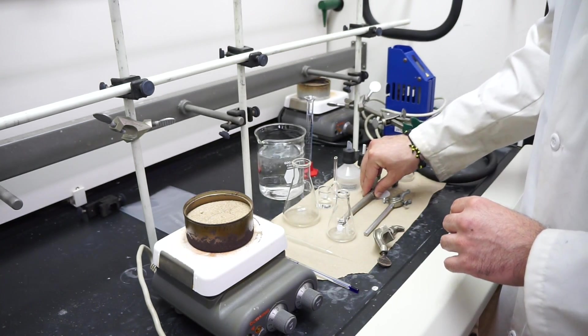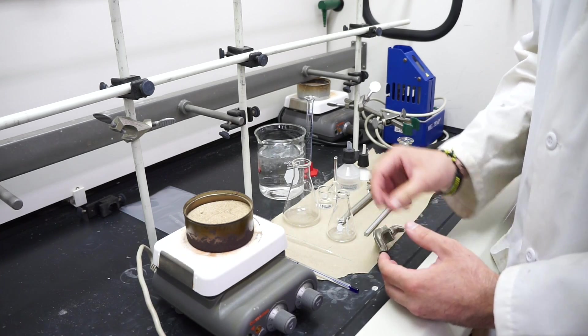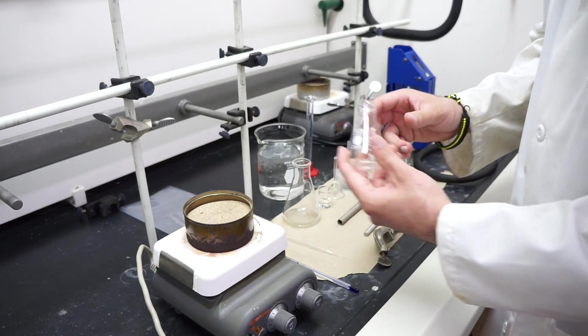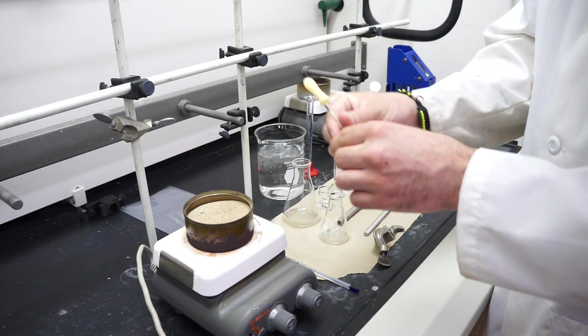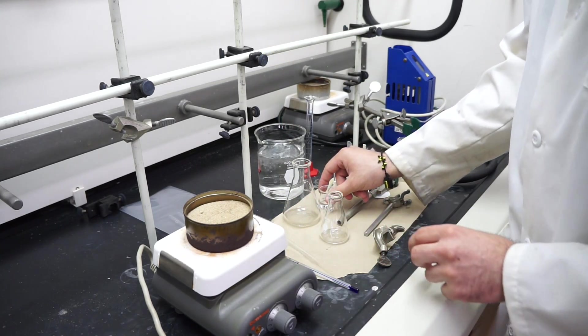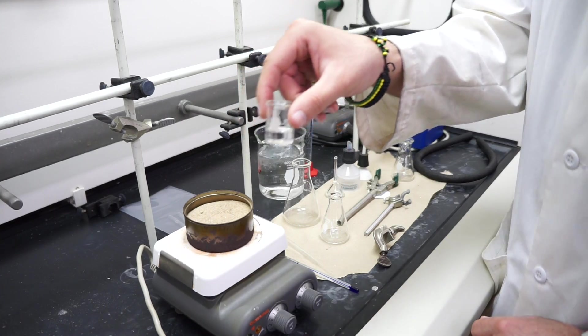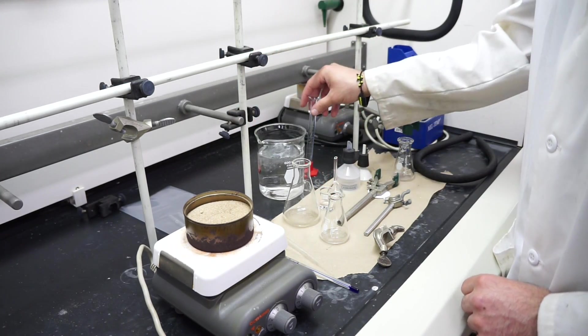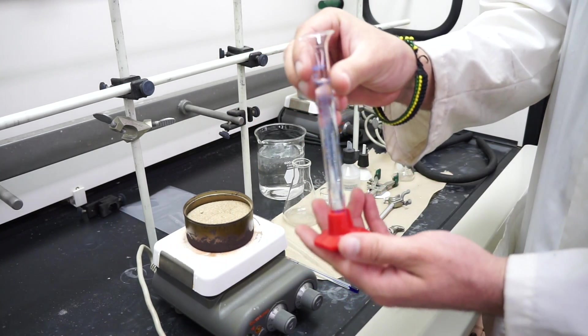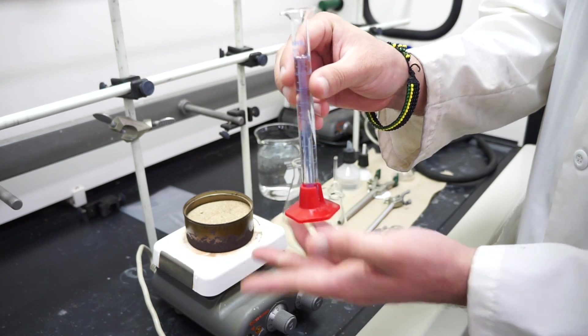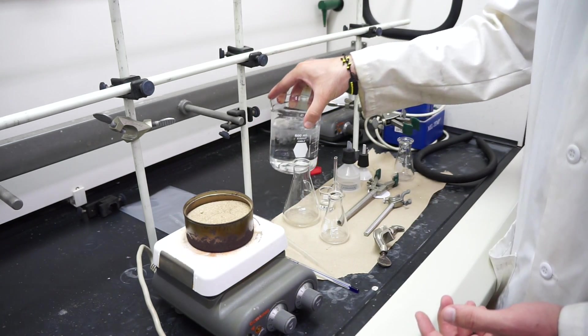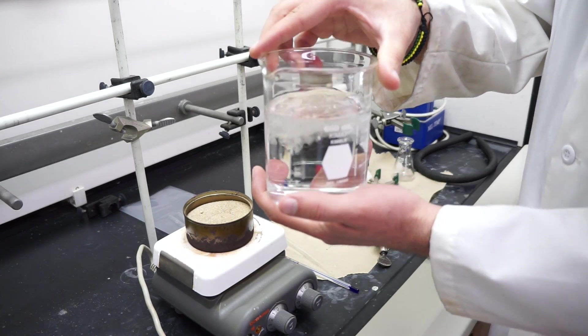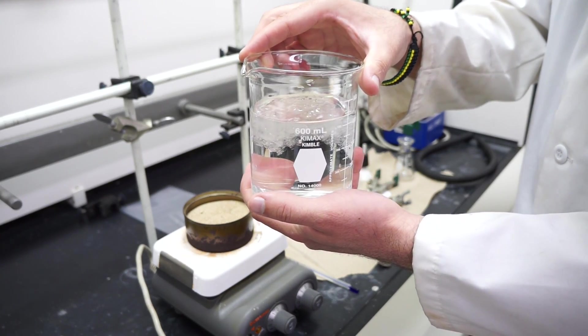There are also things you've used before in 101 and 102: Erlenmeyer flasks, Pasteur pipettes and bulbs, little beakers for solvent, a graduated cylinder for rough measurements. You have a big beaker full of ice for making ice baths.